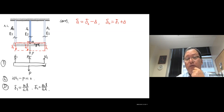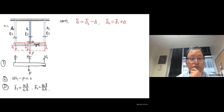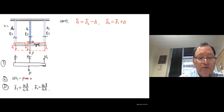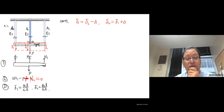A student correctly pointed out that N2 must also appear in the equilibrium equation. The corrected equilibrium is: 2·N1 + N2 − P = 0. Thank you for catching that — the equilibrium requires all three bar forces balancing the load P.